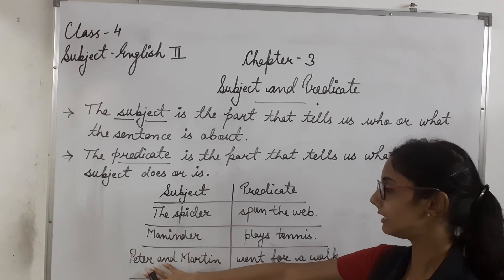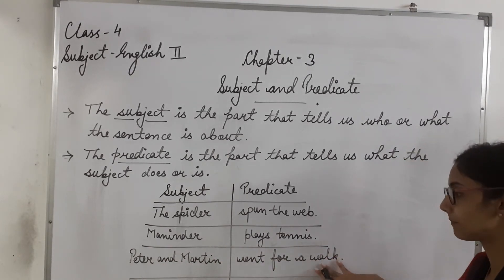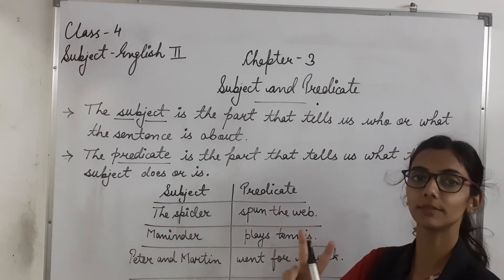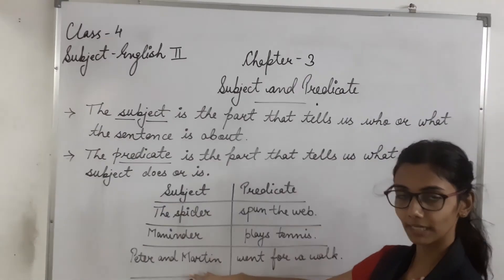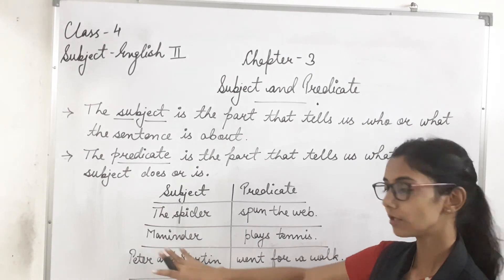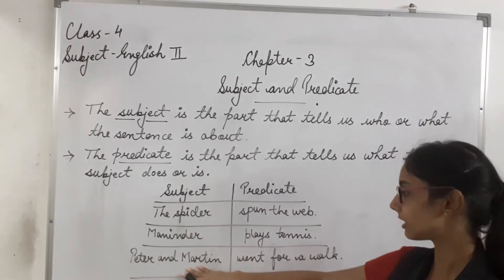In next sentence, Peter and Martin went for a walk. Ab is sentence me paas doh subject hai, kyunki doh logoo ke baare me baat ho rhea hai. Main characters kaun hai? Yeh dhonoh hai. Toh yeh dhonoh hi kya ho jayenge? Hamare subject ho jayenge.